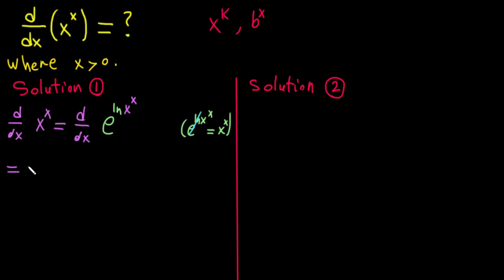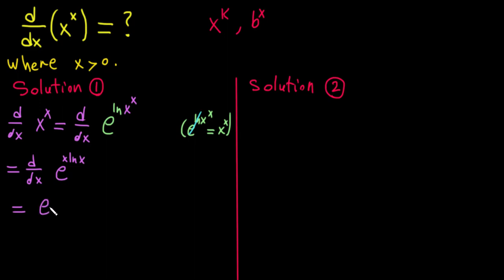From here, we can bring the exponent x down using the logarithm power rule, so the expression inside becomes x·ln(x). Now we take the derivative of e^(x·ln x), and we need to find the derivative of x·ln x.